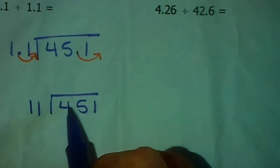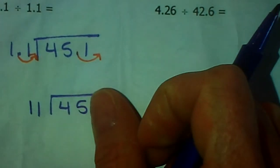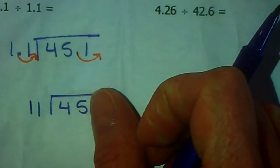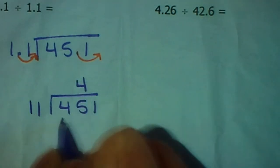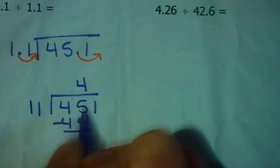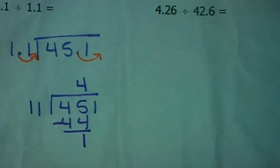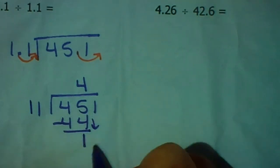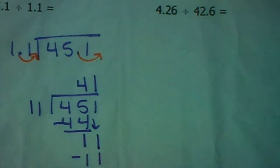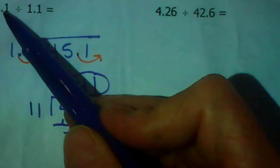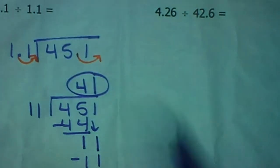All right, so 11 doesn't go into 4. 11 does go into 45. And let's see, it goes in there 4 times. 11 times 4 is 44. We subtract. 1 is left over. There's still a digit left. We drop it down. 11 goes into 11 once. 11 times 1 is 11. There is 0 remainder. Lovely. So 45 and 1 tenth divided by 1 and 1 tenth is 41.